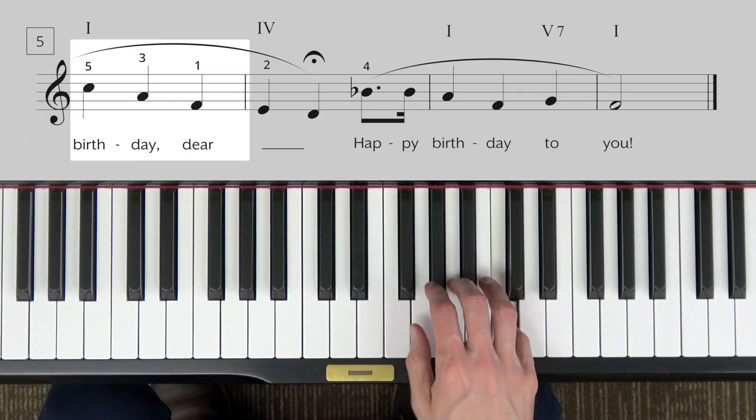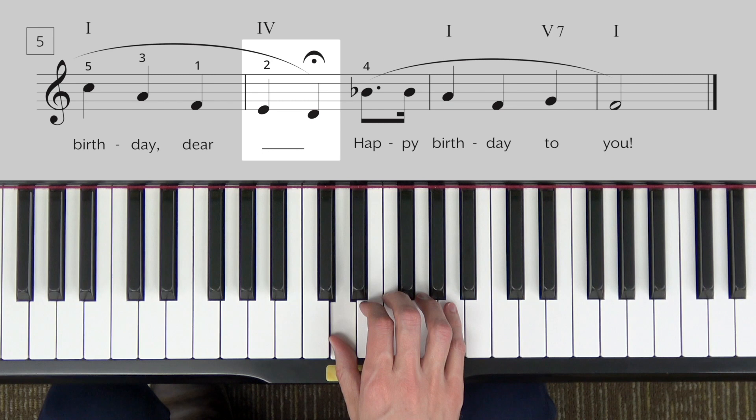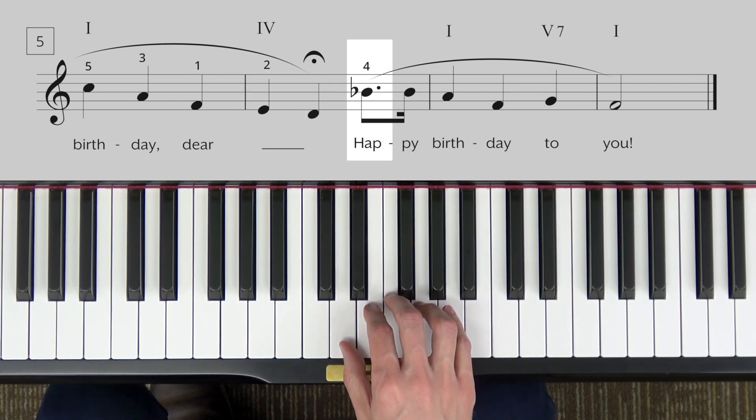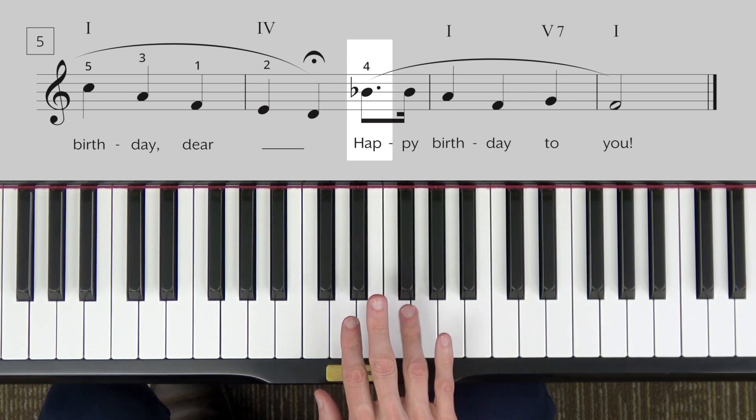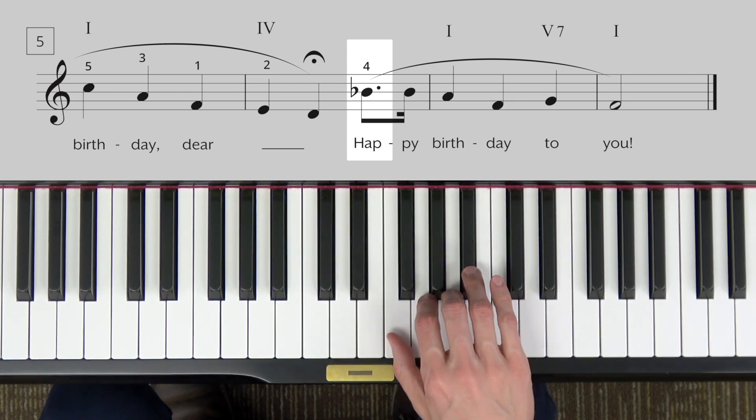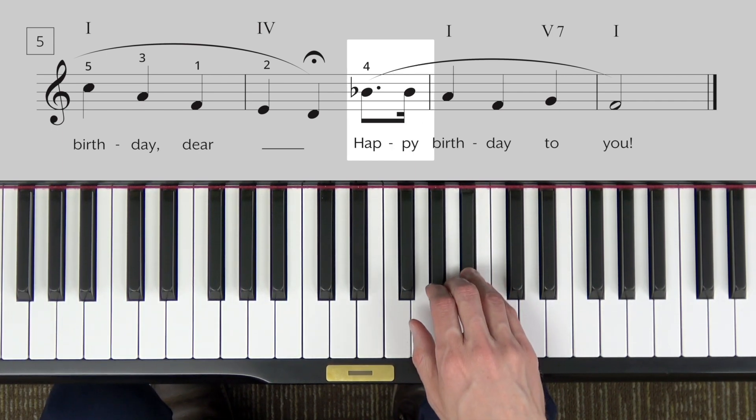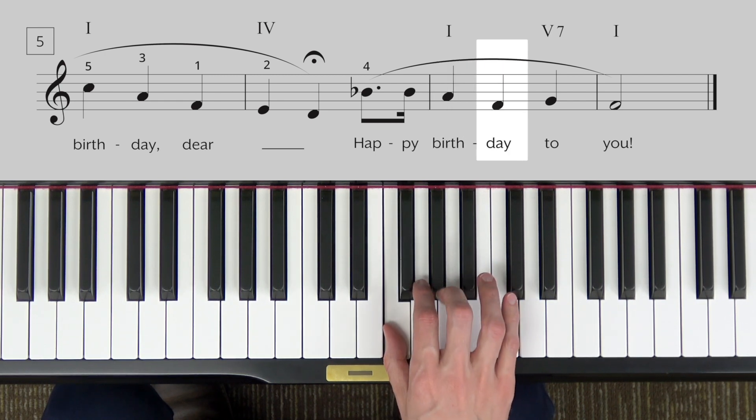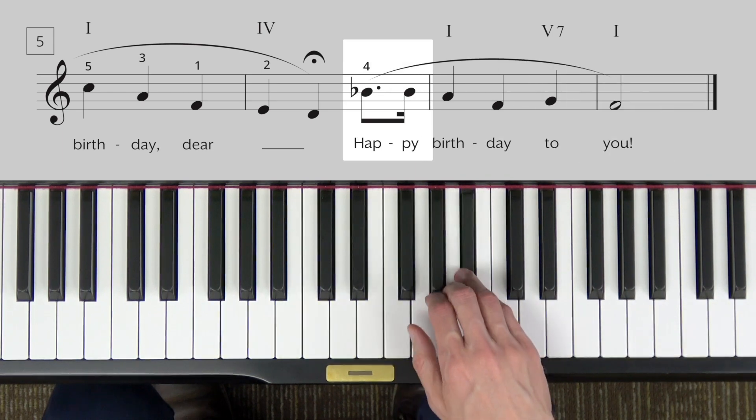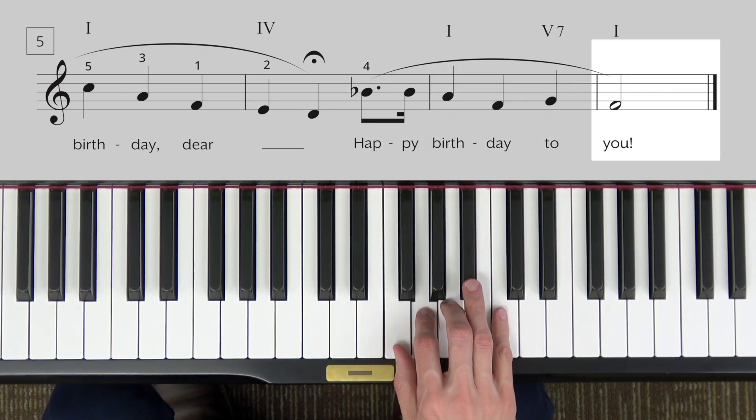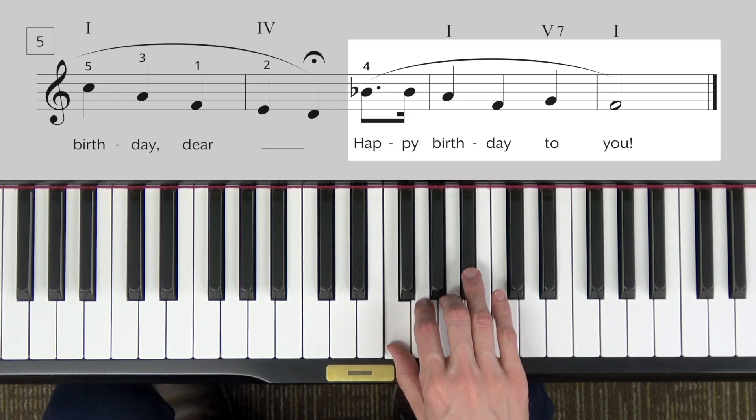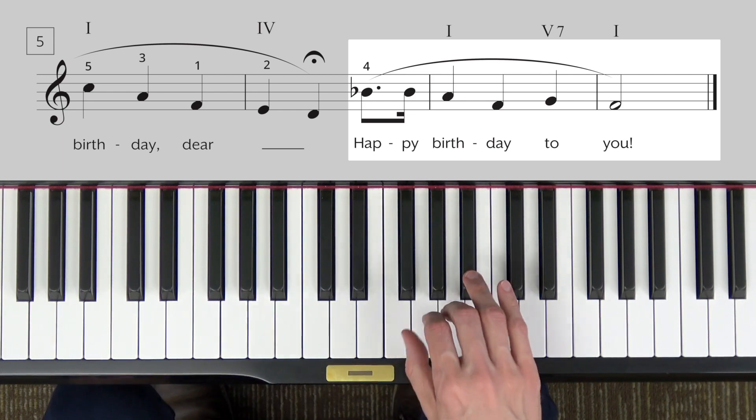Now after you have happy birthday dear Henry with the fermata, now tell me the name of this next note. If you said B-flat you're correct. Now are any of my fingers on a B-flat? No. What finger number does the sheet music ask for on the B-flat? If you said 4 you're correct. So we're going to have to shift our hand again, finger 4 up to the B-flat, so this will now feel like the F major pentascale. Happy, and then step down birth, skip down day, step up, step down, happy birthday to you. We end in the F major pentascale. Okay, pause the video and work on that phrase starting with finger 4 on B-flat, and then press play to go on.